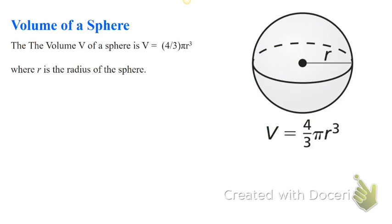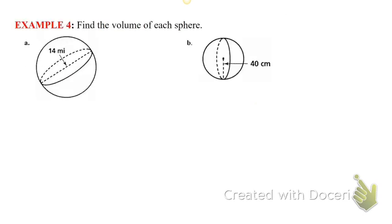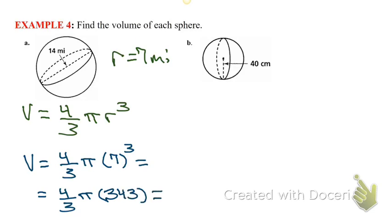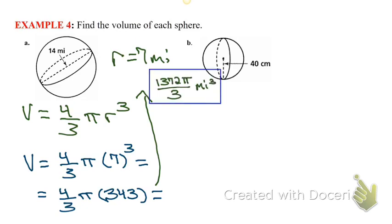Volume of a sphere — this one's a little tricky. It's four-thirds pi times r cubed. Because it's volume, it's r cubed. We've got the diameter as 14, so the radius is 7. The volume is going to be four-thirds times pi times 7 cubed. Multiply four-thirds by 343, then put pi at the end of it. Don't forget it's miles cubed. I kept it as an improper fraction for exact value rather than divide out the 3 and get a decimal.